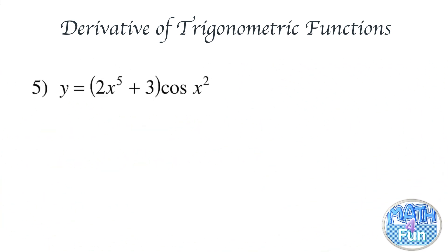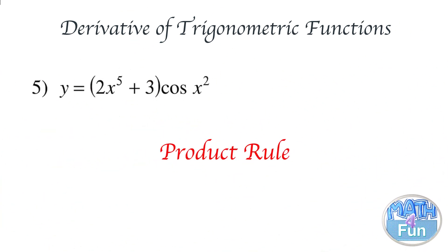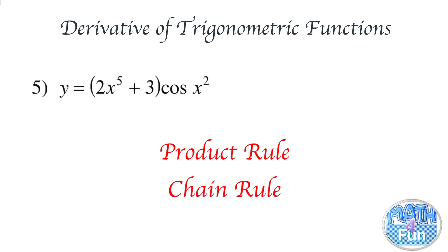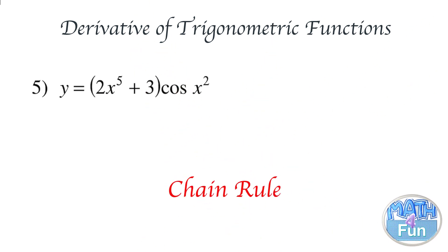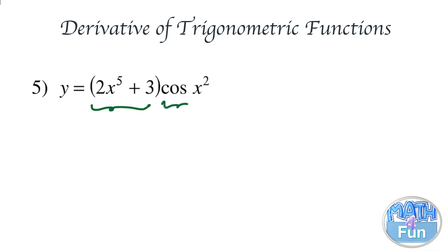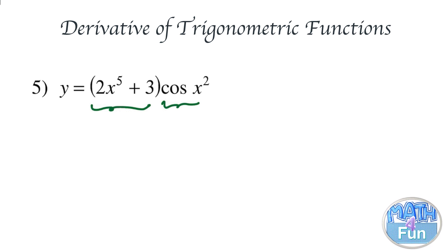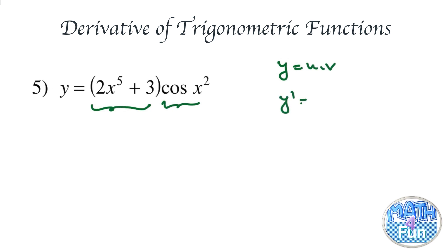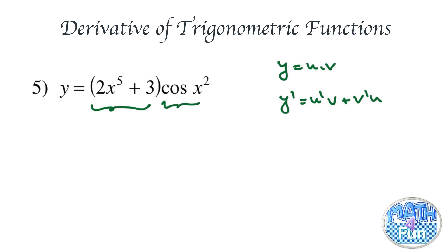Here we need to apply the product rule, chain rule, and trigonometry all together. If we consider the first part as u and the second as v, then y prime equals u prime v plus v prime u. We will do this faster since you have already mastered the product rule.